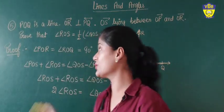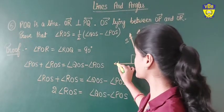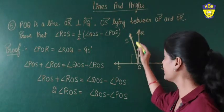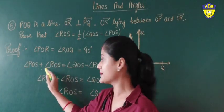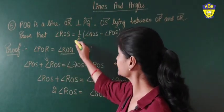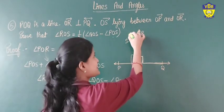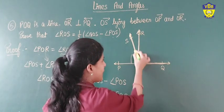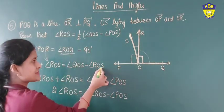Now please check your proof. Can we write angle POR in two parts? Angle POR equals angle POS plus angle SOR. So I am writing POR as angle POS plus angle ROS. Now for ROQ, you can convert ROQ as QOS minus ROS — this part minus this part gives you this part. So I am writing QOS minus ROS.